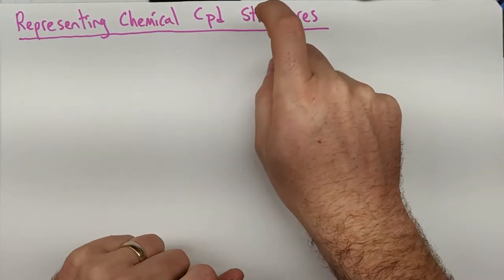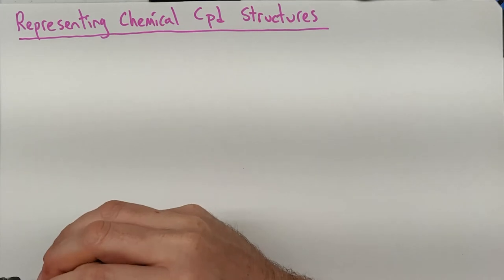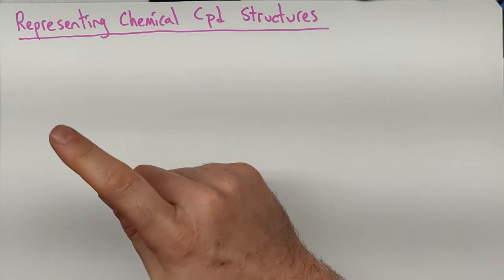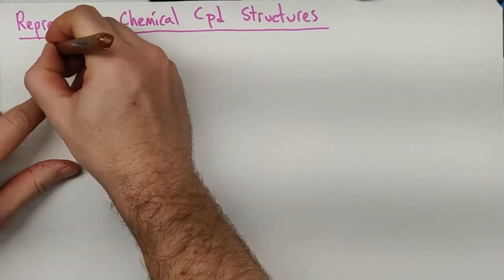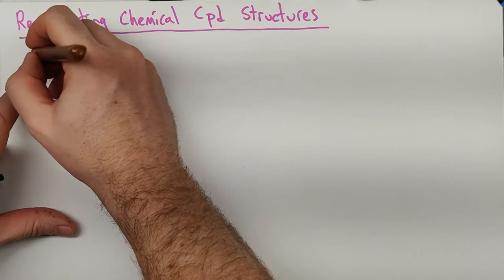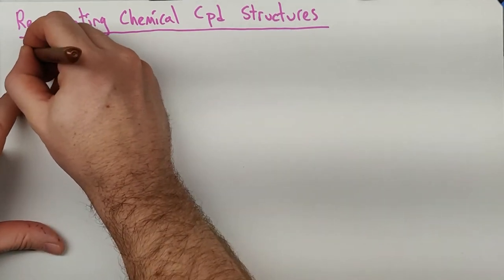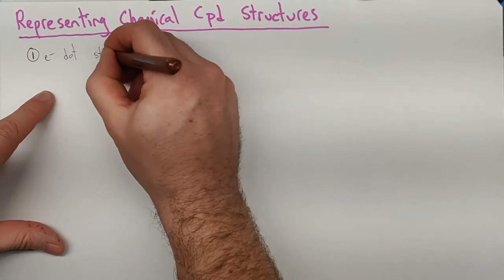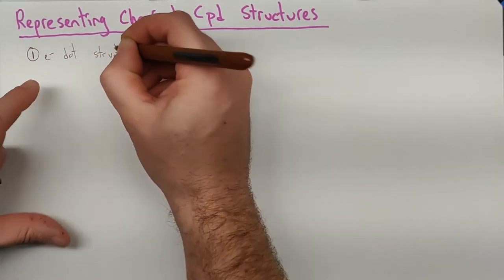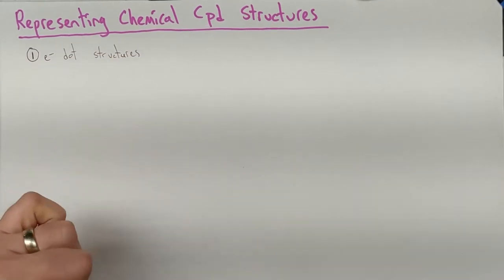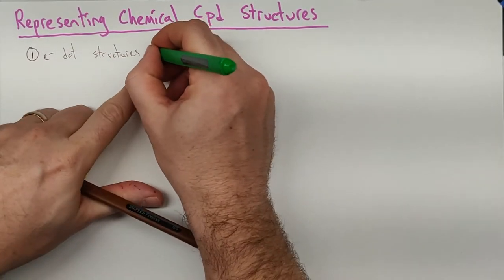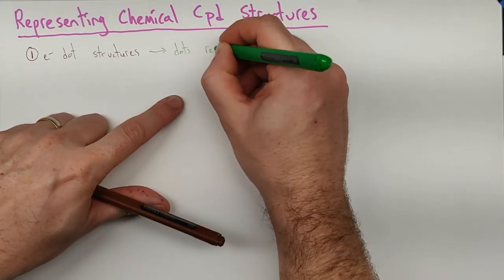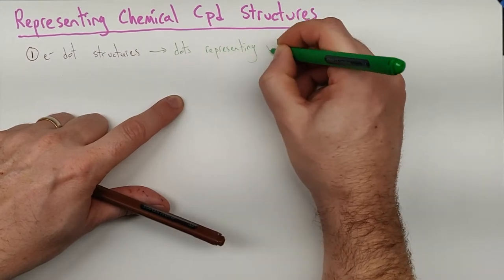What we're going to do right now is come up with some of our two-dimensional representations of these structures using our electron dot notation. So as a reminder from electron dot notation, we're going to now do electron dot structures. And that has a very straightforward plan. For electron dot structures, we're going to use dots representing valence electrons.